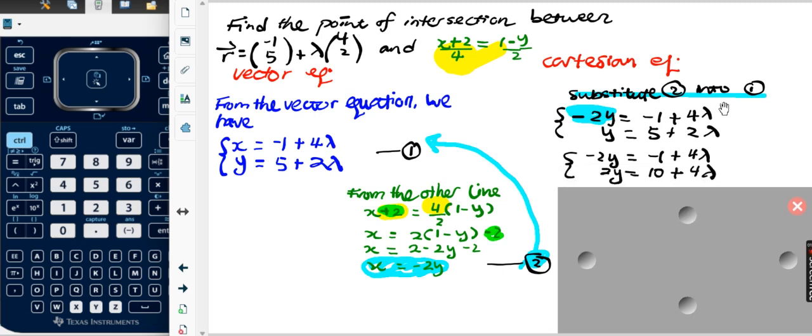So right now, what we can do is eliminate lambda. Here's four lambda, here is two lambda. So what I can do is make the second equation, y times two. That becomes two y, five becomes ten, two lambda becomes four lambda. And now I want to get rid of lambda, that means I can add these two equations together.